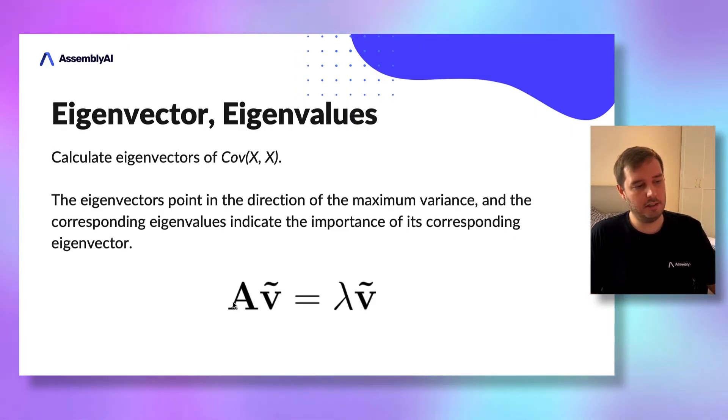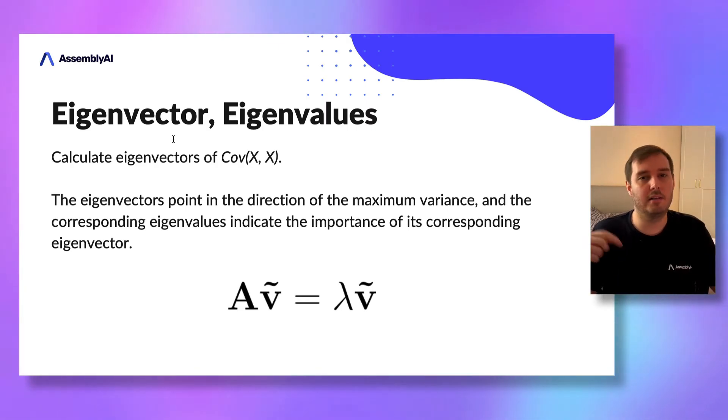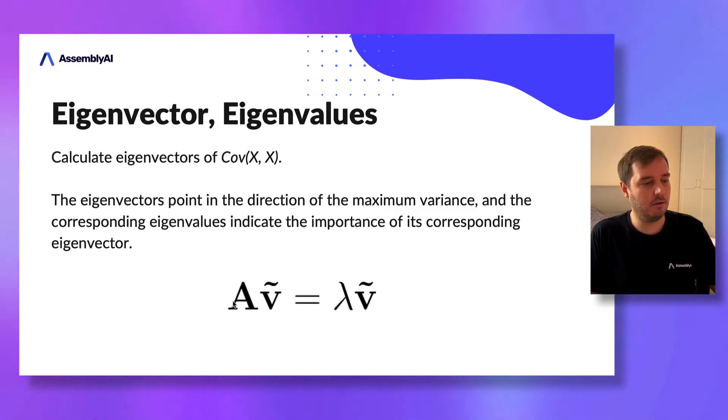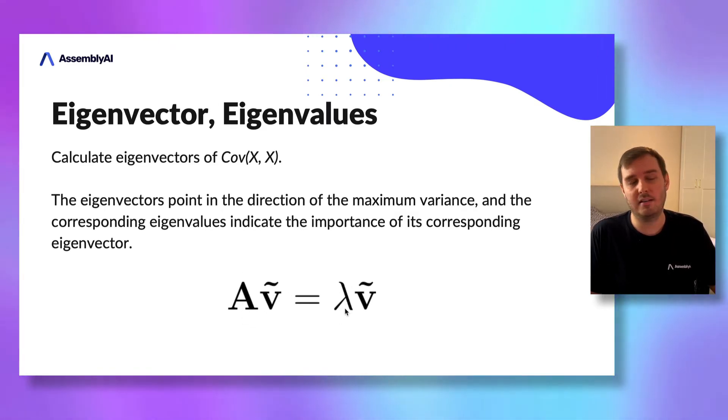I'm not going into detail about what eigenvectors are. If you want to learn more, I'll put a resource in the description. But basically, an eigenvector has to fulfill this equation: if we multiply an eigenvector with a matrix A, this is just a scaling with a scalar value lambda. This is what eigenvectors do.